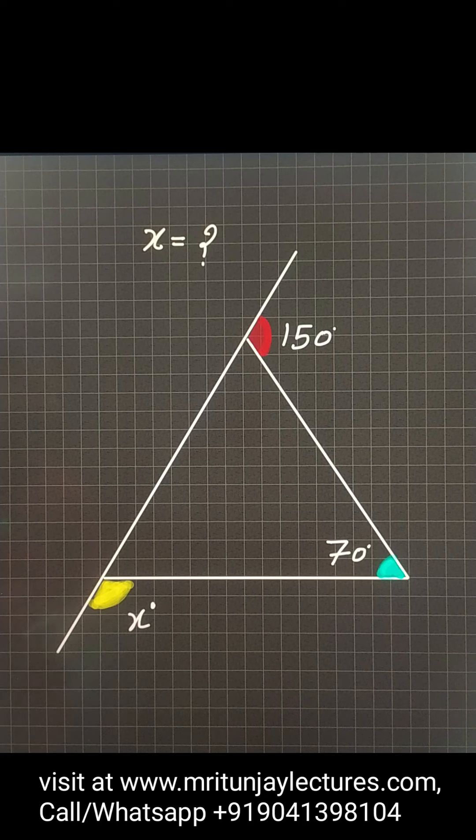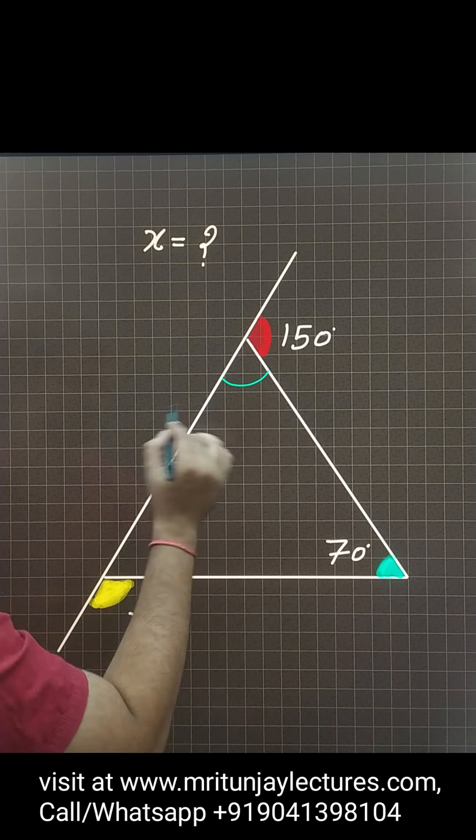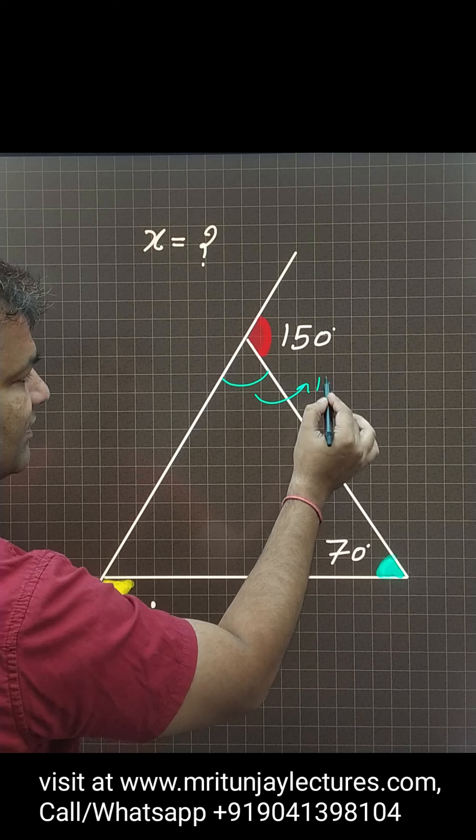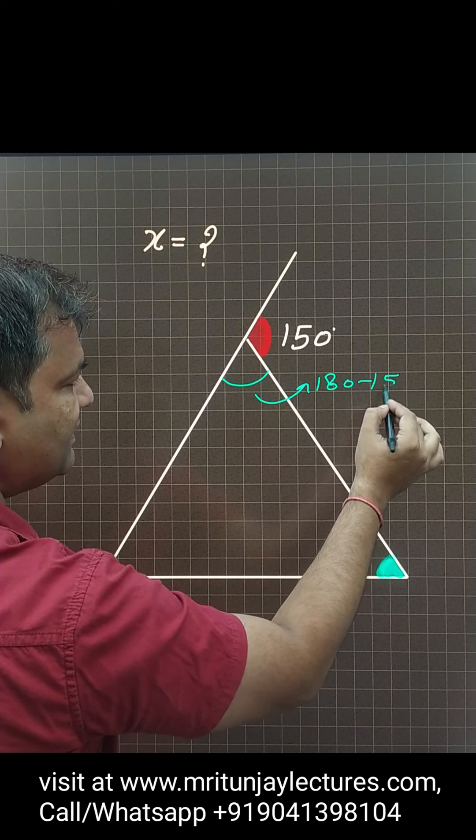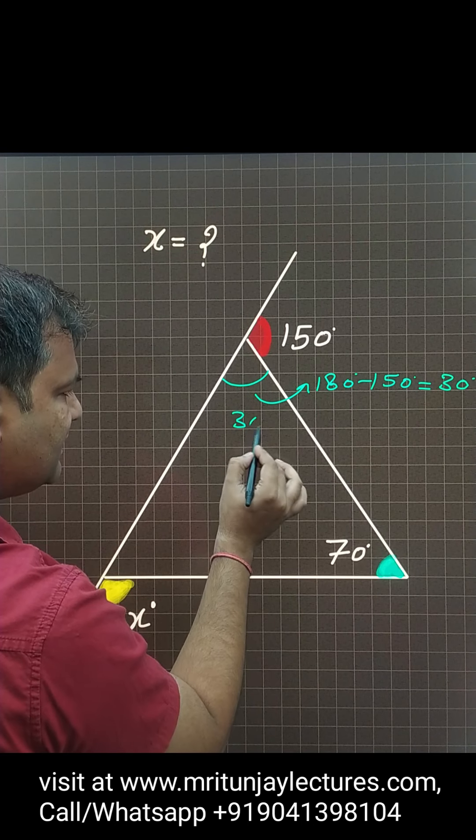Now question of the day, determine x. How can we determine? First of all, that one is 70. What about that angle? 180 minus 150, that is how much? 30 degrees. So that angle is how much? 30 degrees.